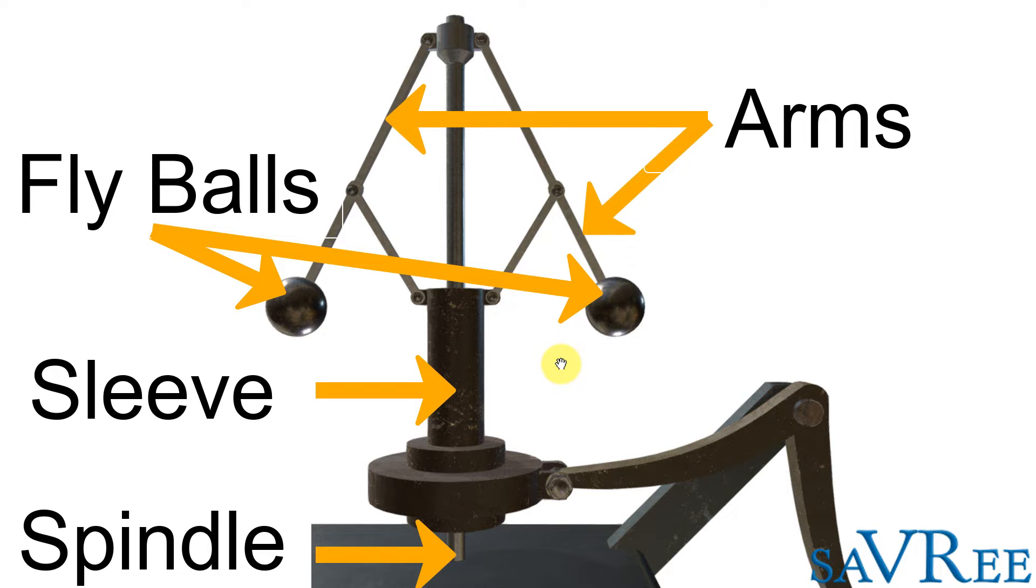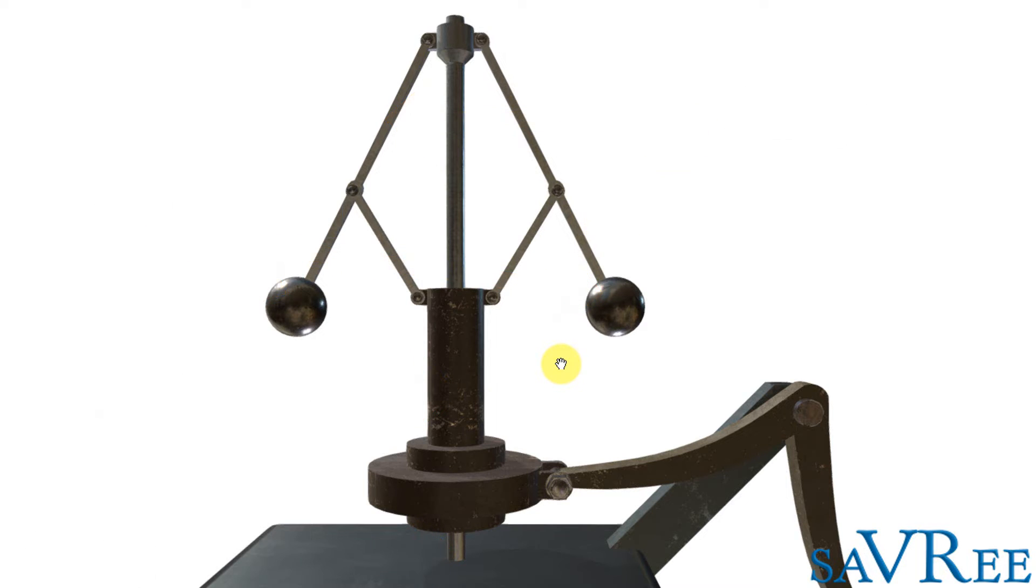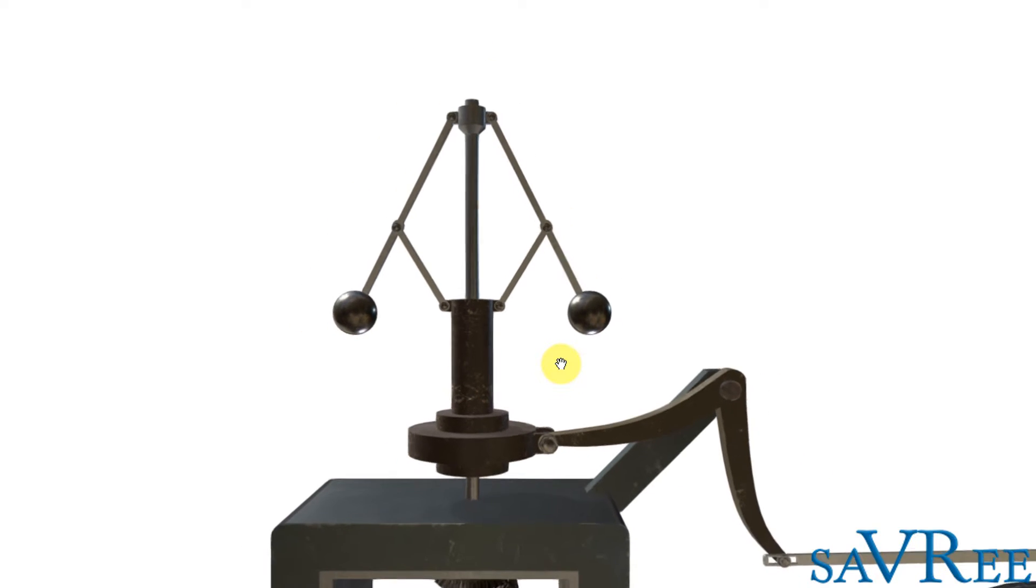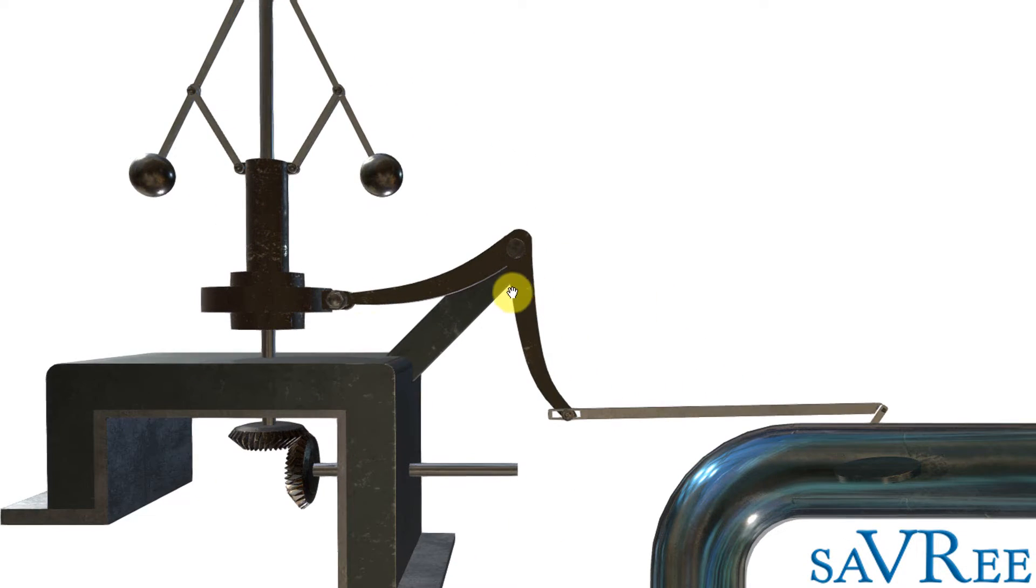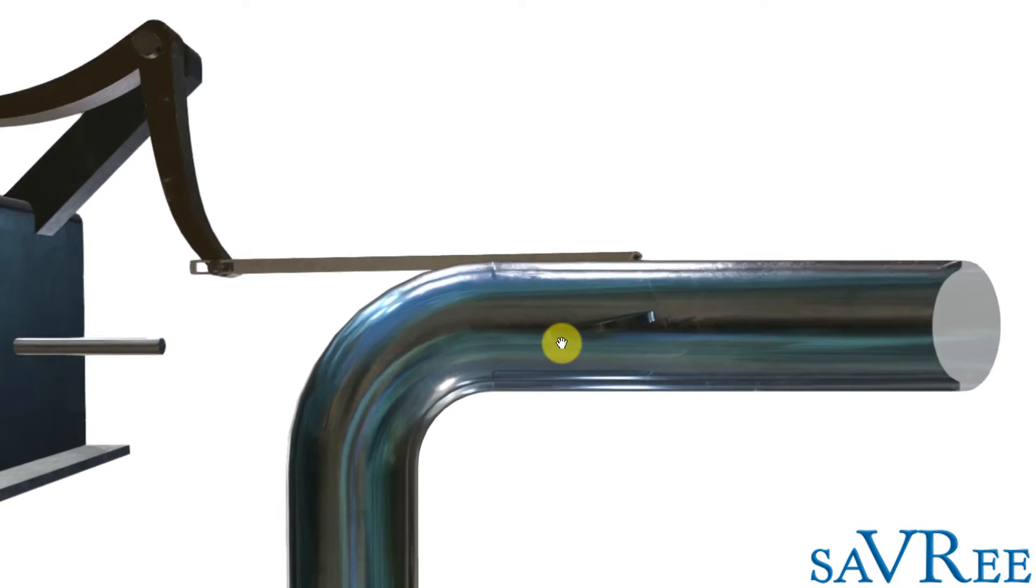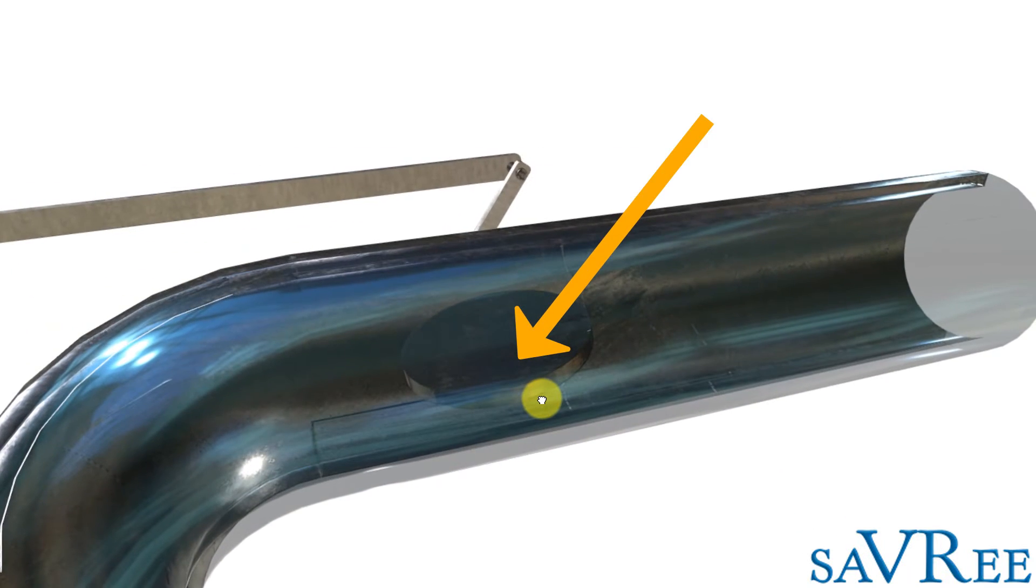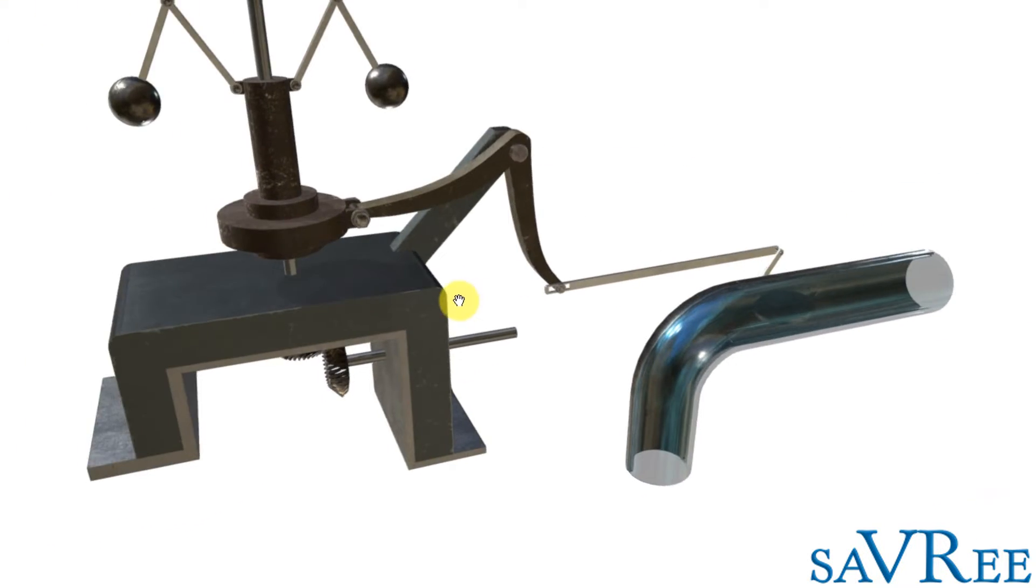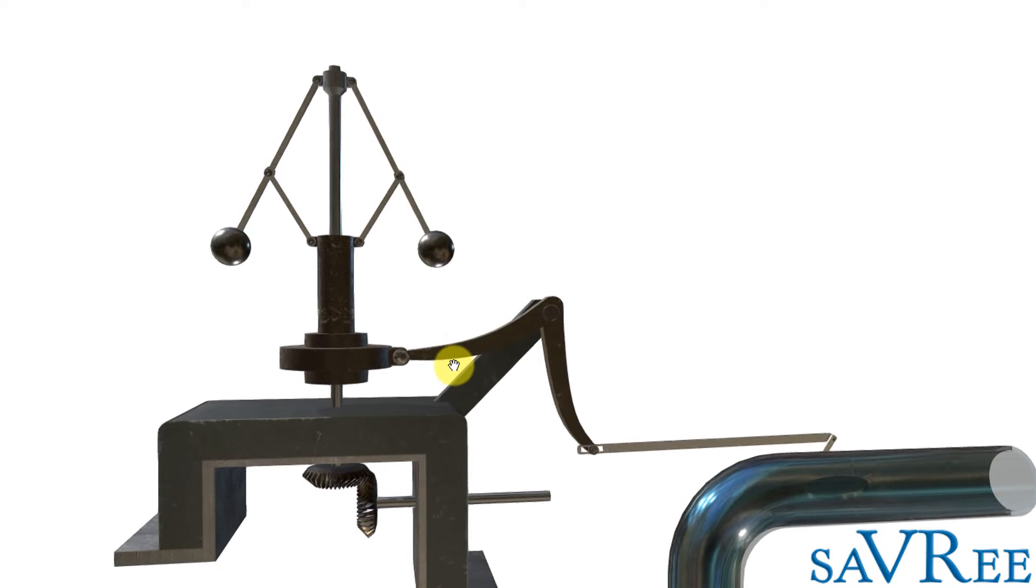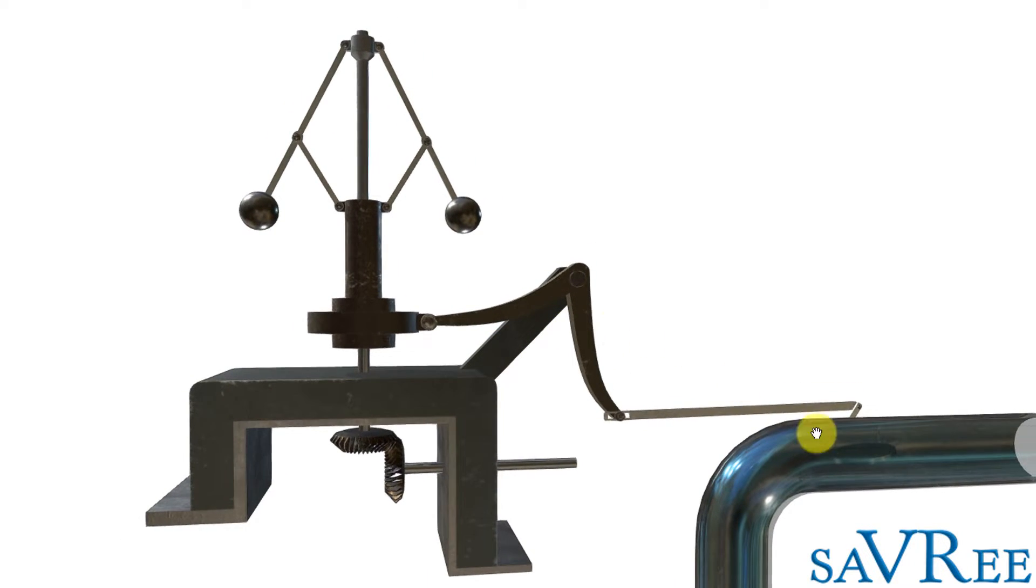Now what's going to happen is as the centrifugal governor accelerates or as the whole thing spins, you're going to see the sleeve, the lower piece moving up and down. And as it moves up and down, it is going to move this linkage, this whole arrangement here and that is going to then open or at least change the position of this valve in there. So I've talked you through how it works but I probably should have just showed you, it would be a lot easier. So let's check it out.